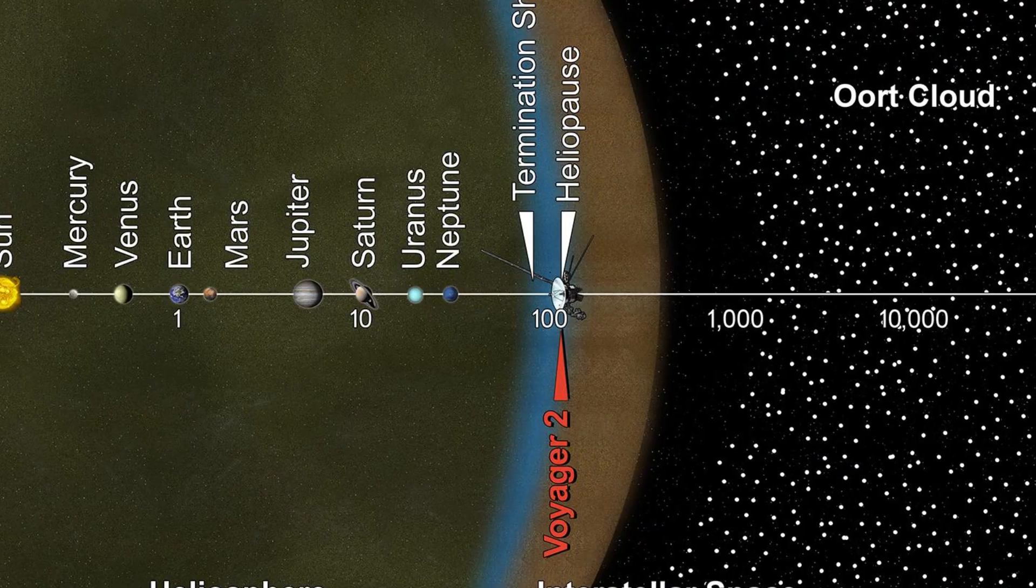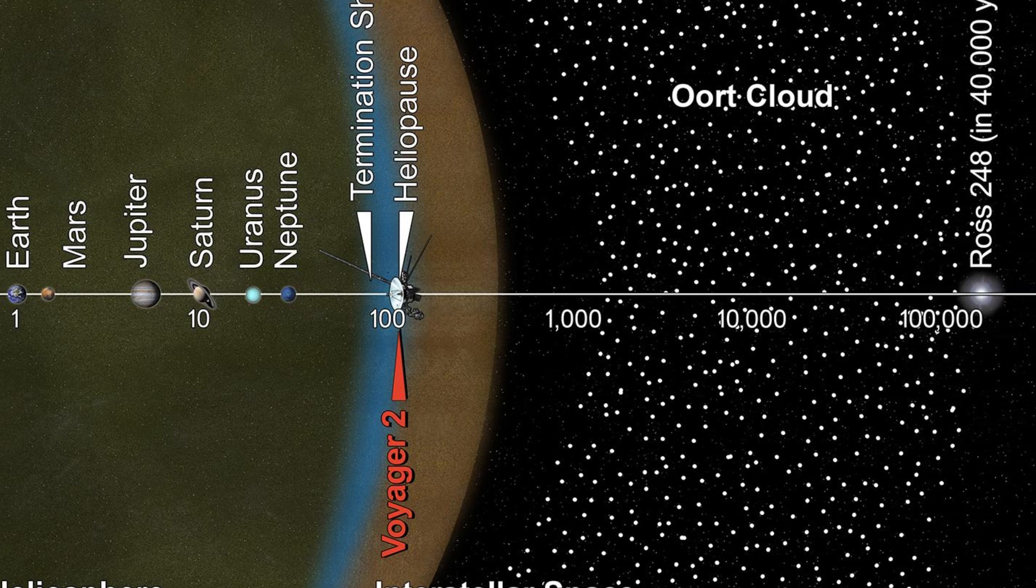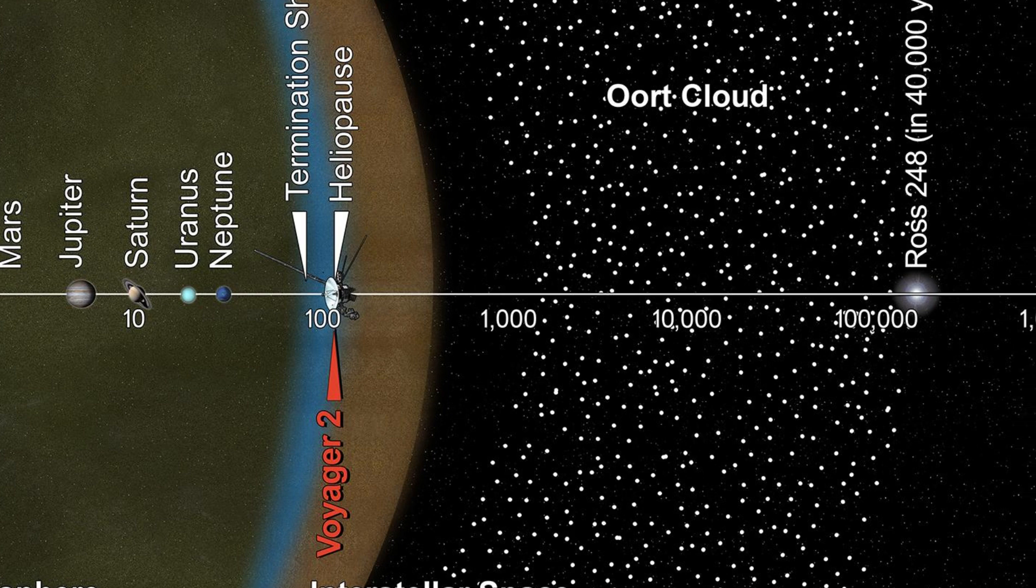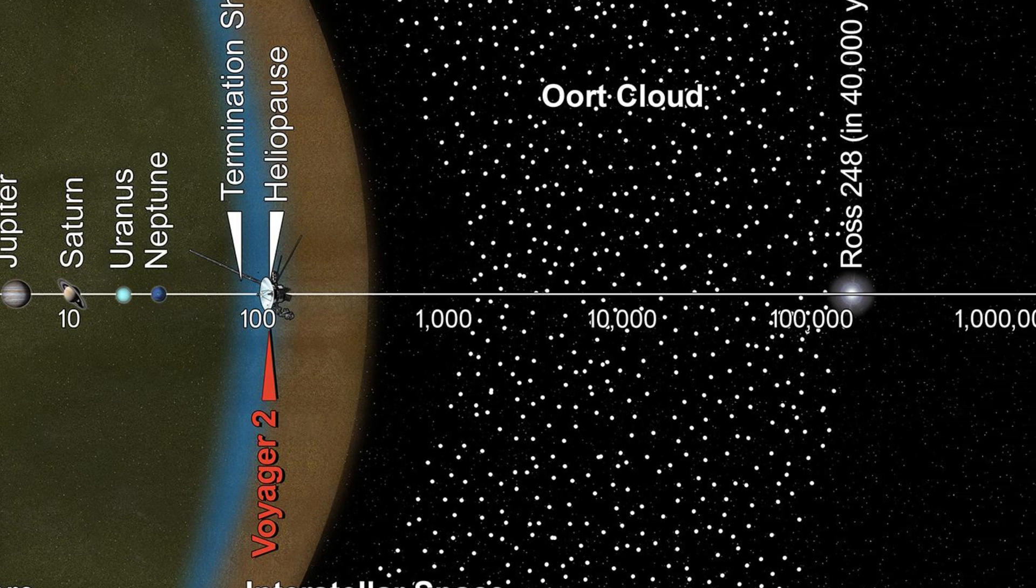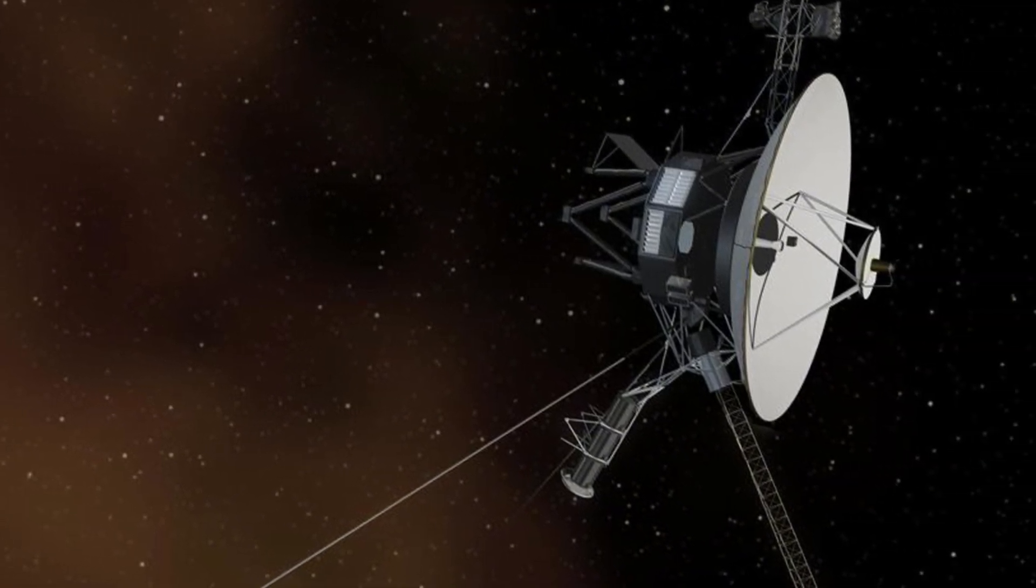When Voyager 1 crossed the heliopause in August 2012, it entered a realm no human-made object had ever explored before. The transition was not what scientists had initially predicted, revealing the complex and unpredictable nature of space beyond our solar system.